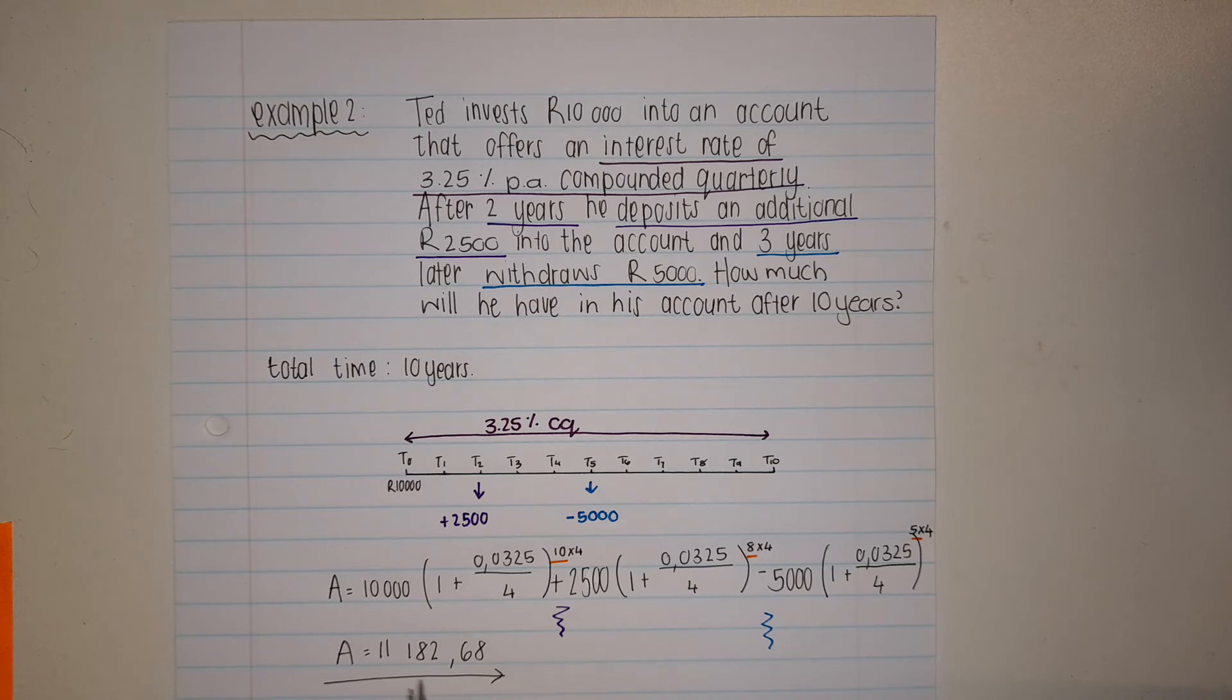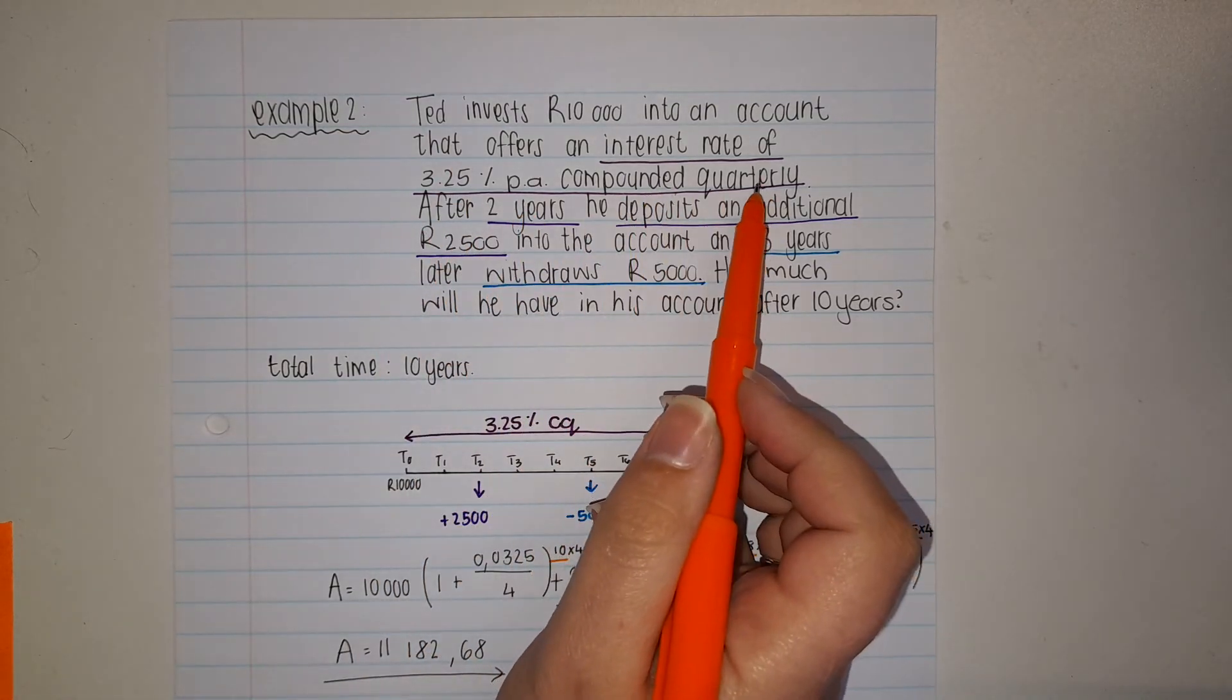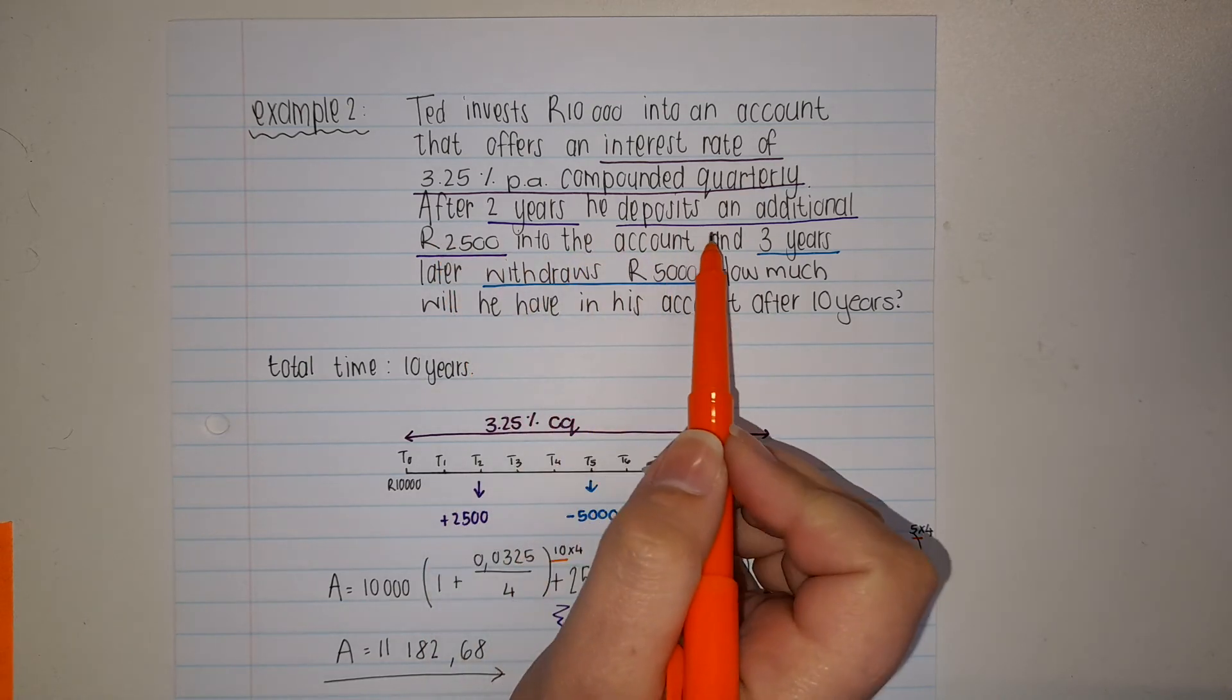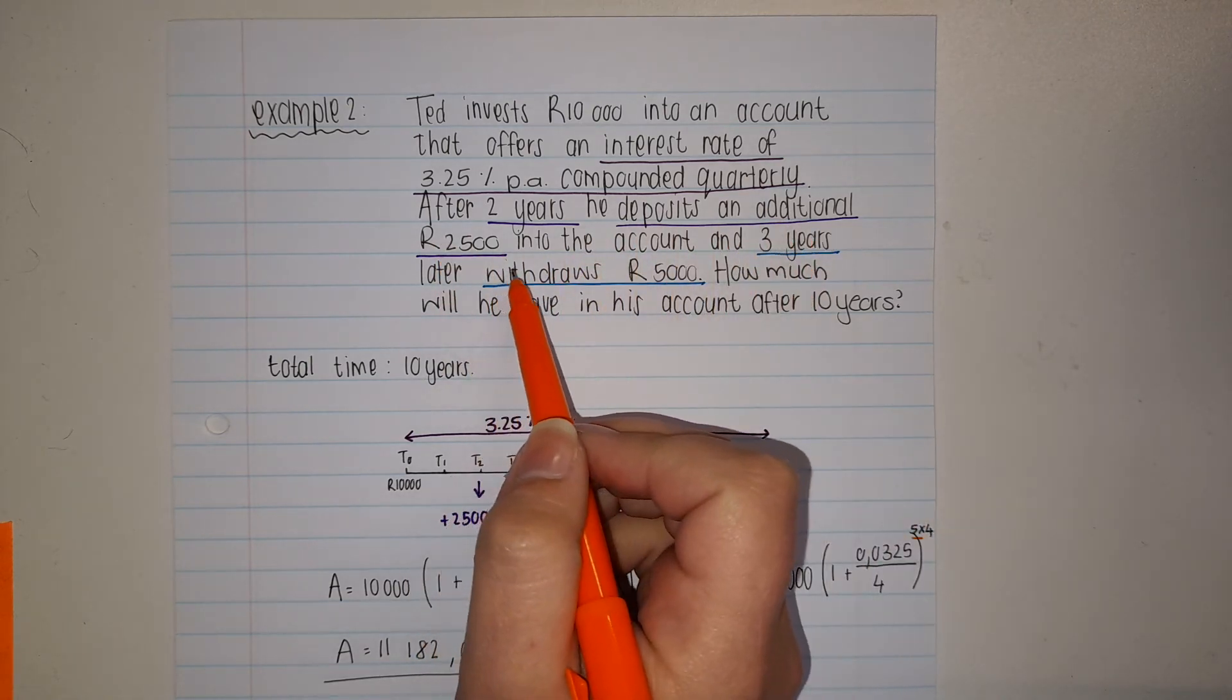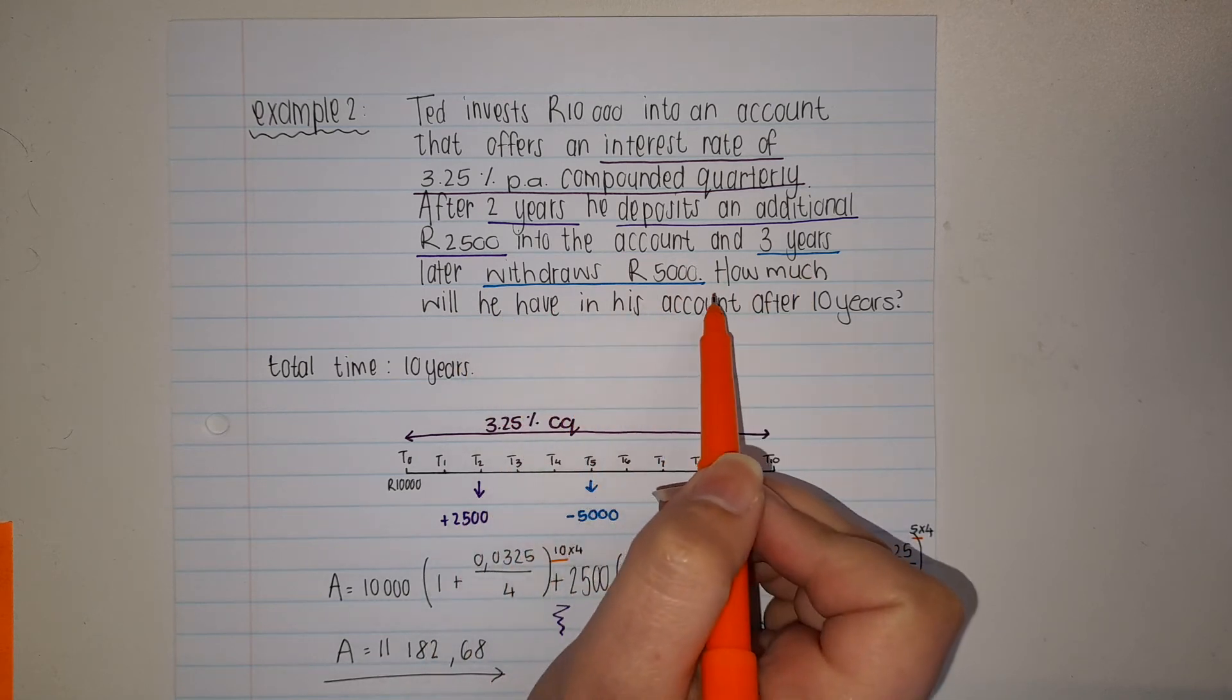After 2 years he deposits an additional 2500 rand in the account, and 3 years later withdraws 5000.